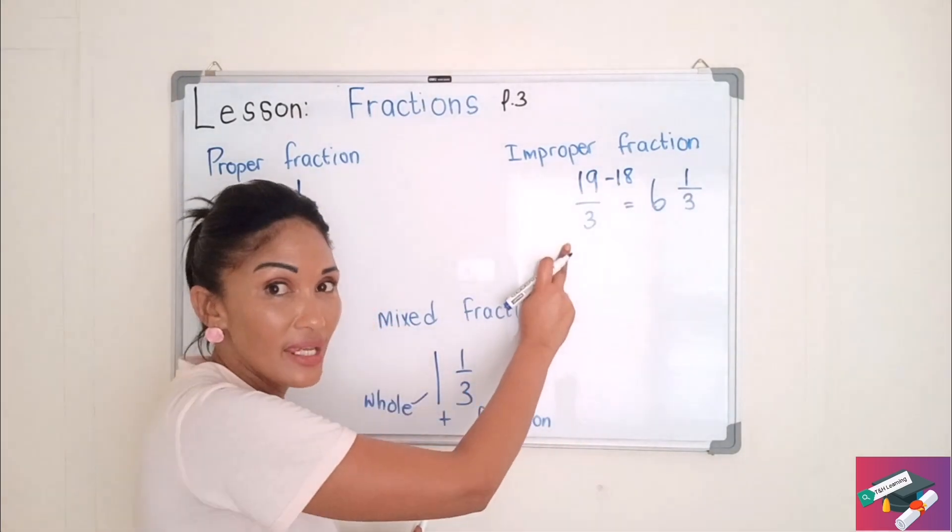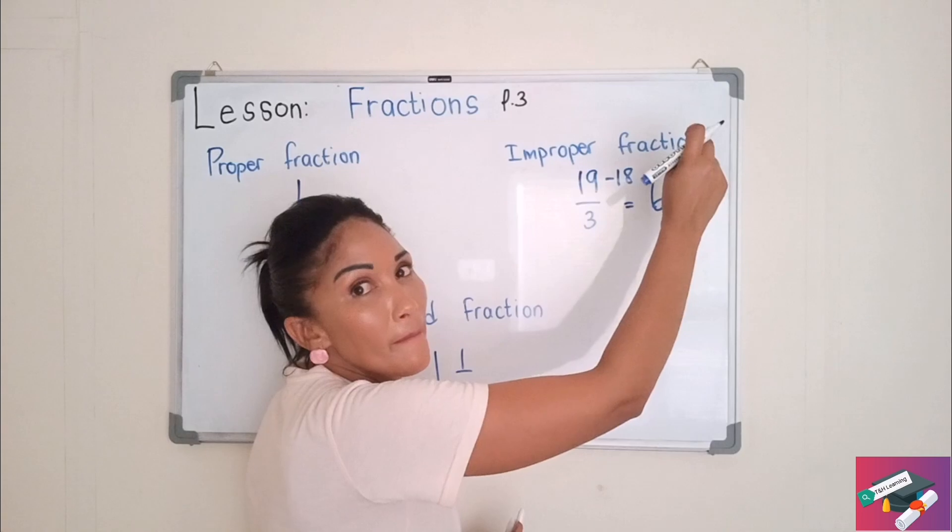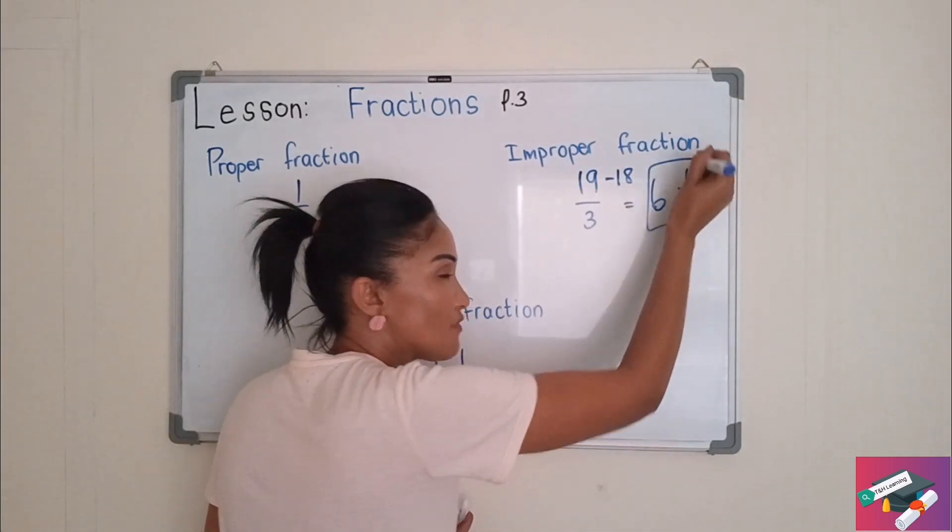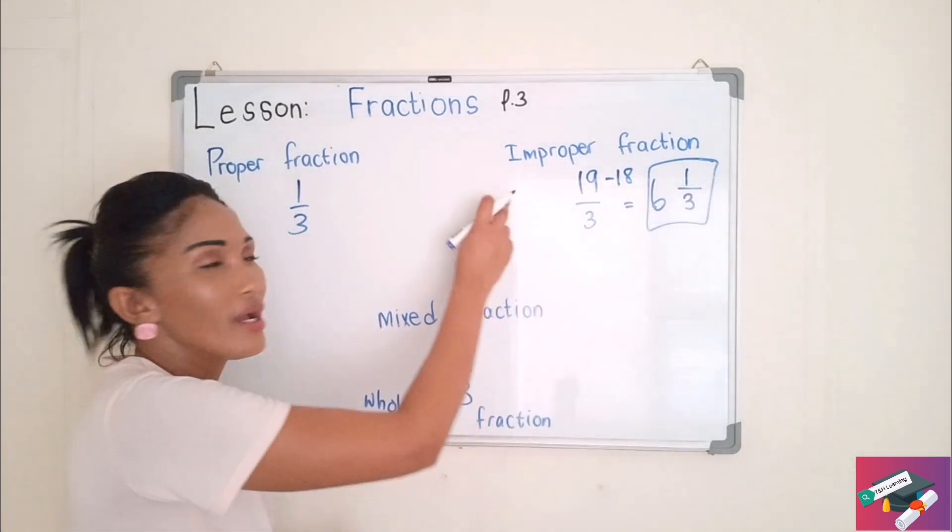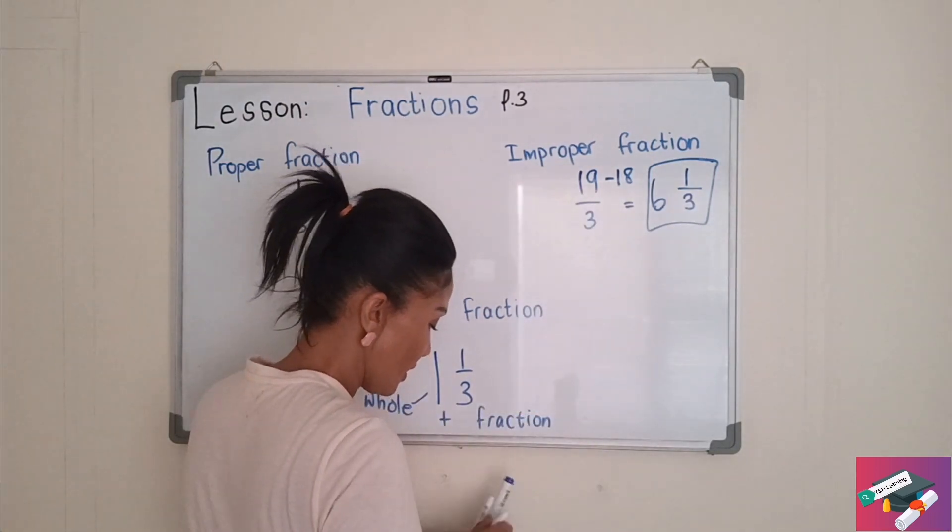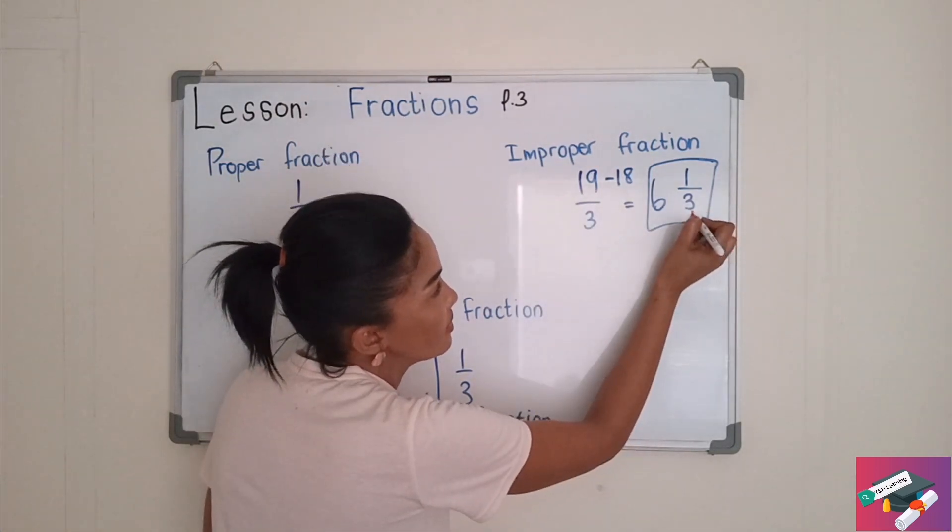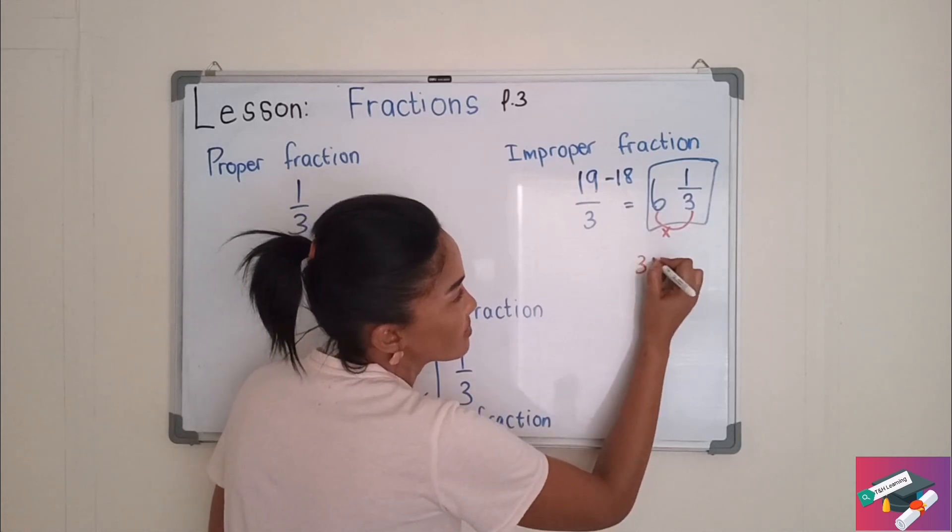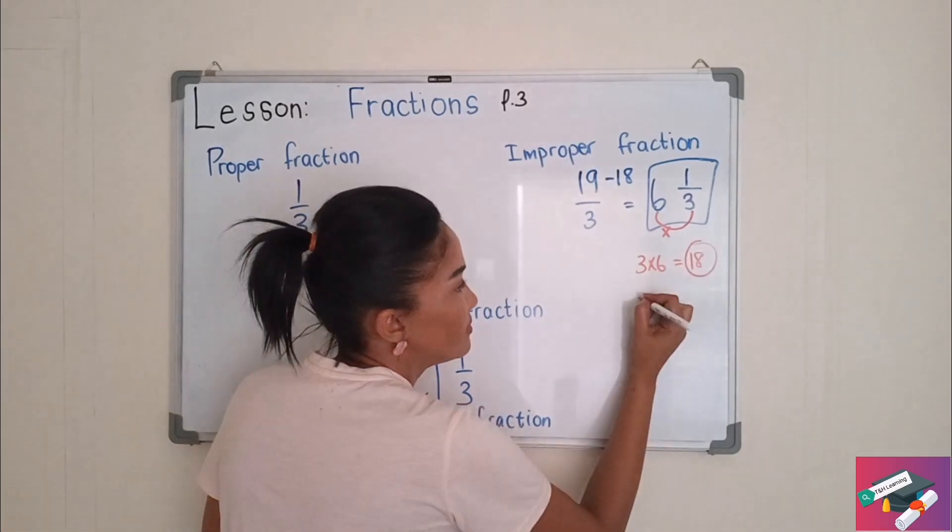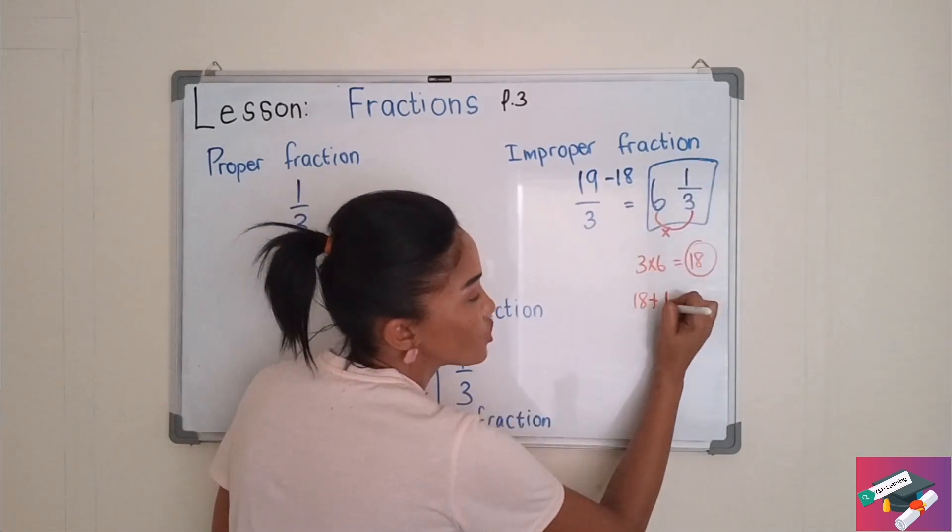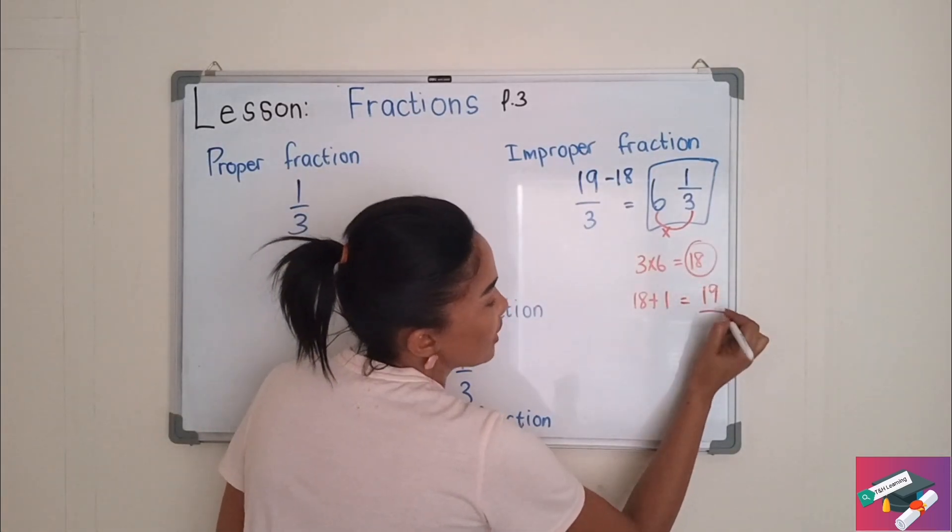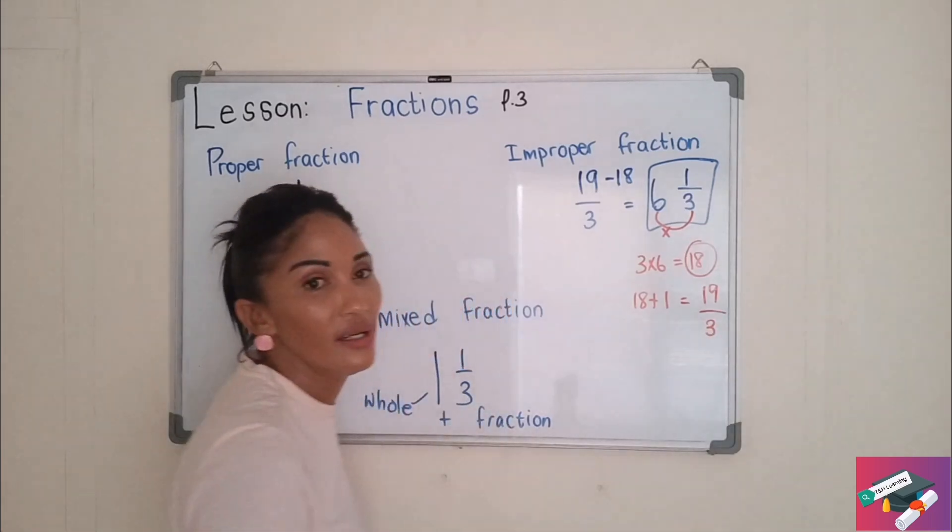So 19 over 3 is also 6 plus a third. So how can I take this mixed fraction and put it back into an improper fraction? What you do is, you say 3 multiplied by 6 is equal to 18. So you take 18, you plus it by your 1, which is your numerator, it's equal to 19. And your denominator stays the same.